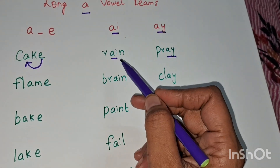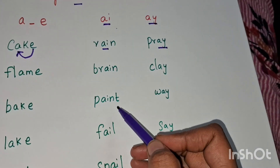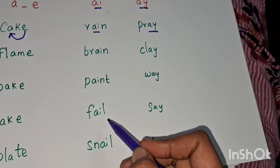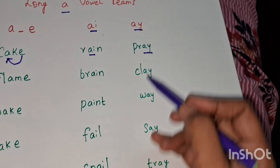A-I. Examples: rain, brain, paint, fail, snail.